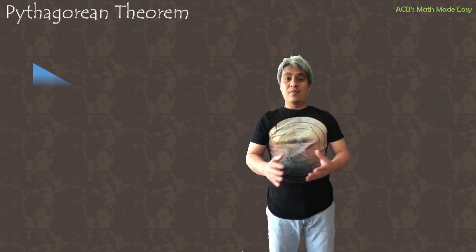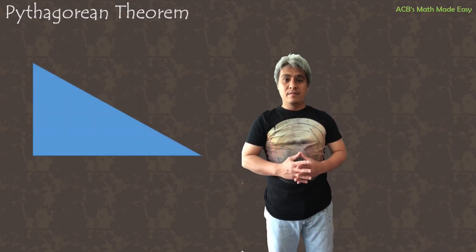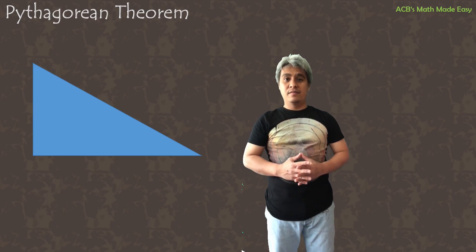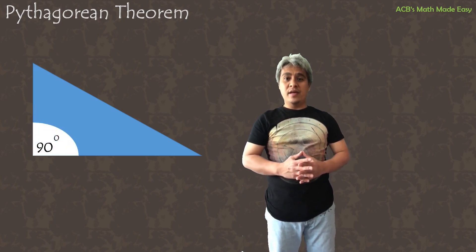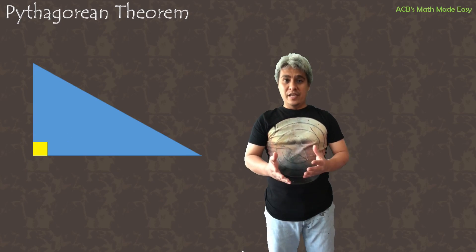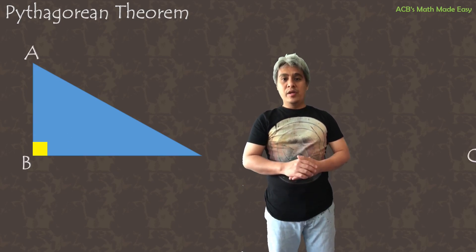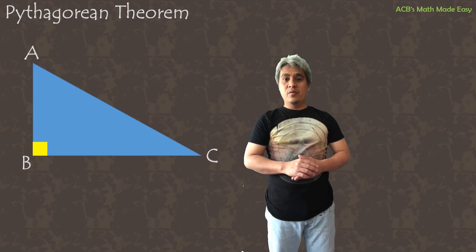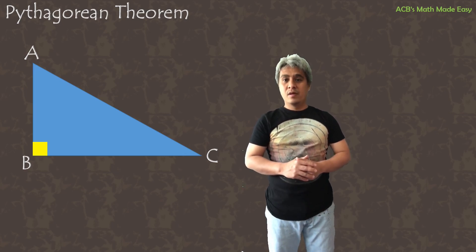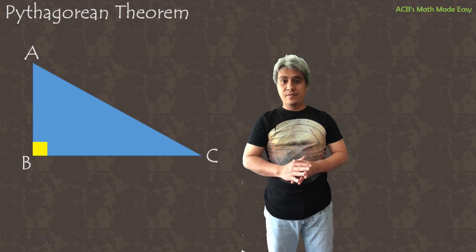This is our triangle — a right triangle. This means that one of the angles of the triangle is 90 degrees. We will name our three vertices with A, B, and C, all in capital letters.